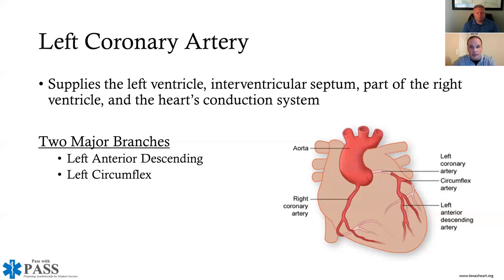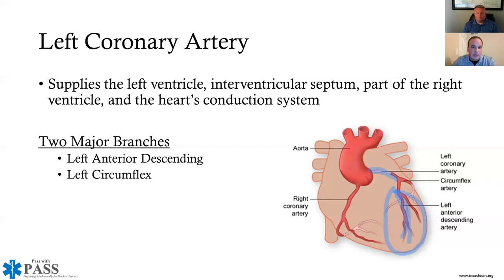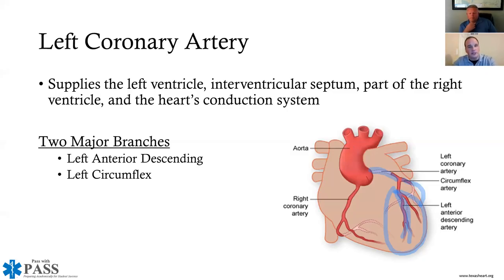There are two main branches of the left coronary artery. The first is the left anterior descending (LAD), which runs down the anterior side of the left ventricle. The second major branch is the circumflex, which branches off near the top of the left main coronary artery and wraps around to the posterior side of the left ventricle.